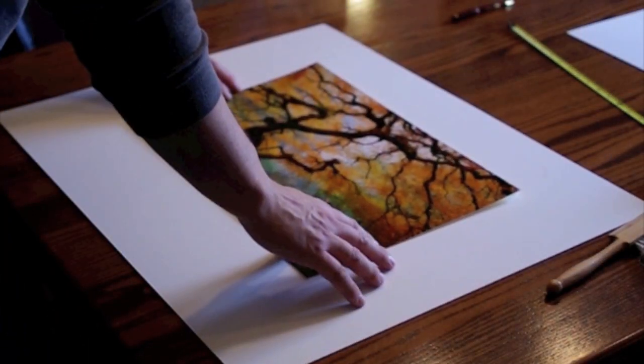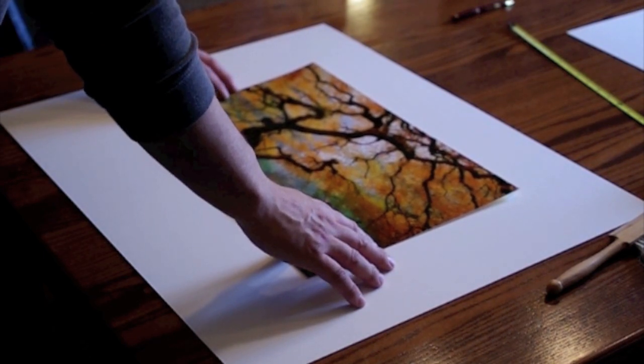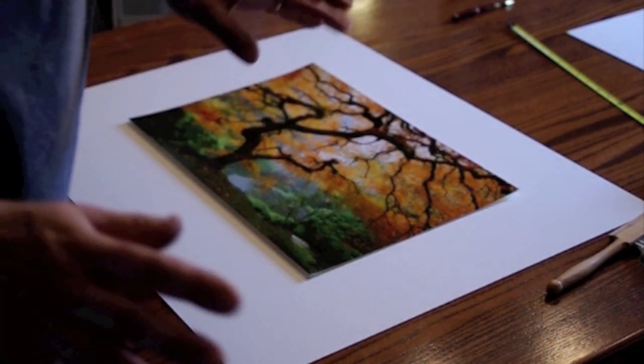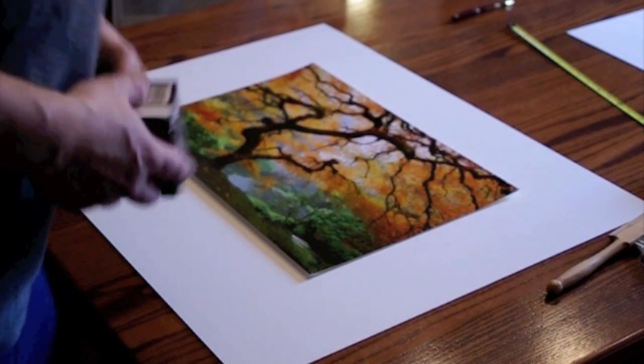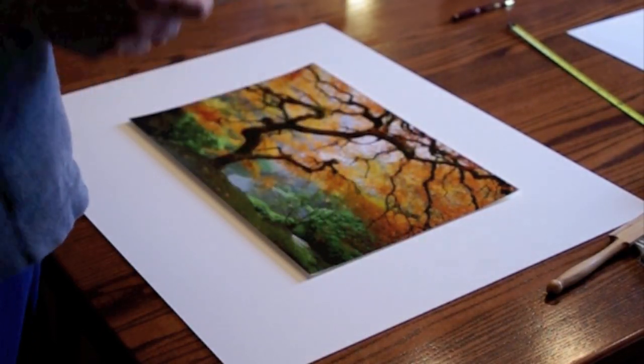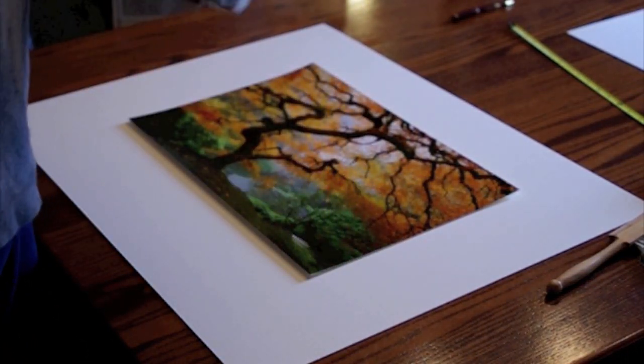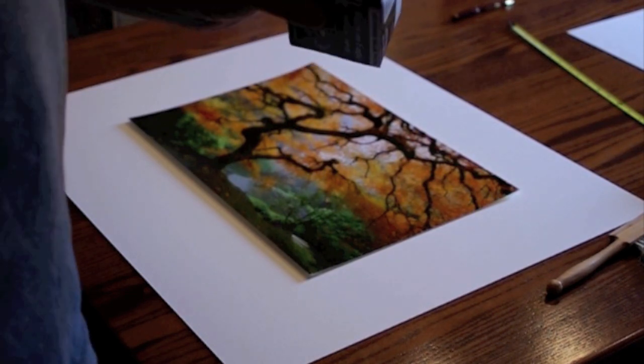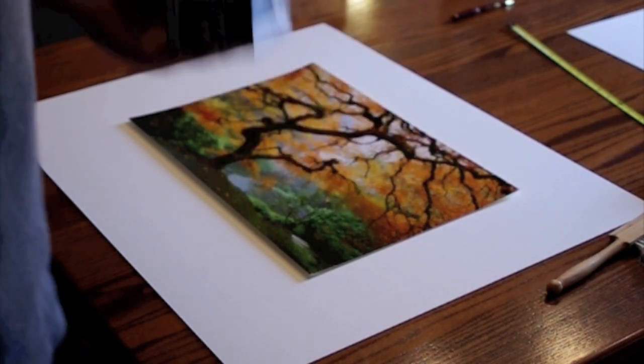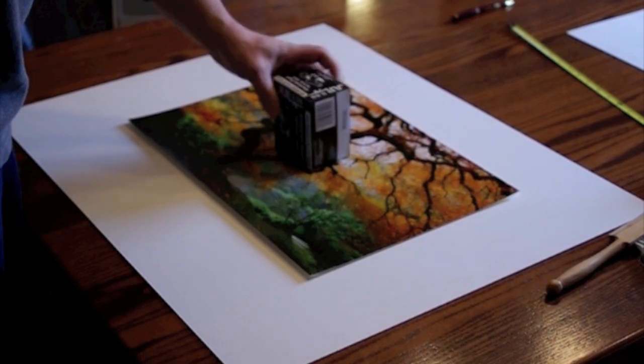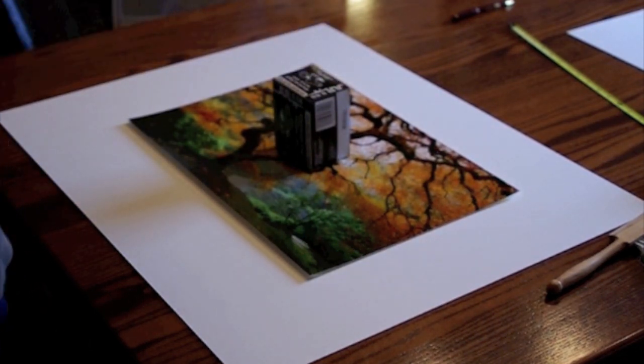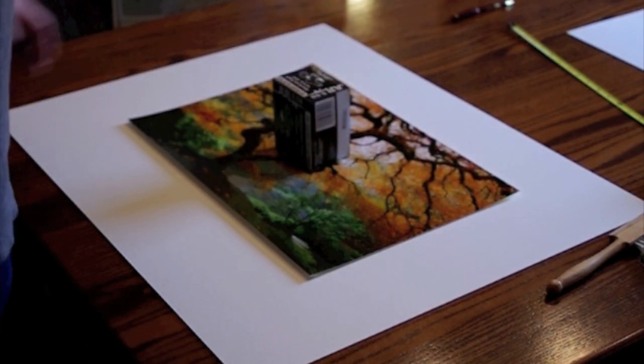So now we have our board that we cut earlier. This is a 12x18 print. It's going on a 22x28 board. And this is where it starts getting tedious. This part takes a lot of precision. We need something heavy. This is a box of AR-15 ammunition. It's heavy. It works. Well, it's part of living out in the middle of nowhere in the west out here.